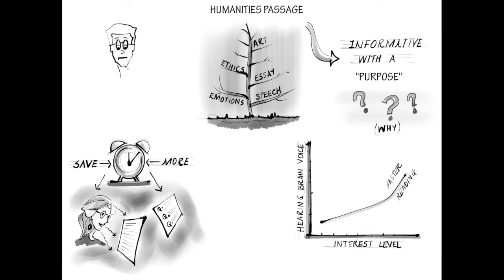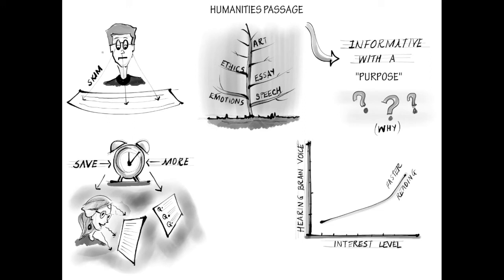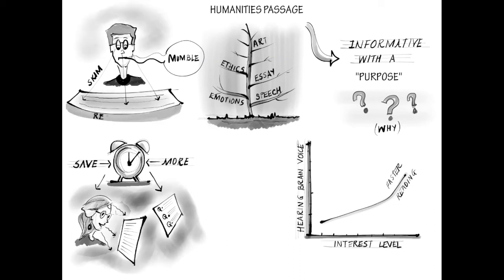If you are less interested in the content, then skim and focus on the structure of the passage, determining both the main idea and the author's purpose in writing it. And remember, when you skim, you will still hear your brain voice when you read certain parts. The rest of the time is more of a mumble — quick, moving along — and then rephrasing after you've read a section, especially if the text is dense.